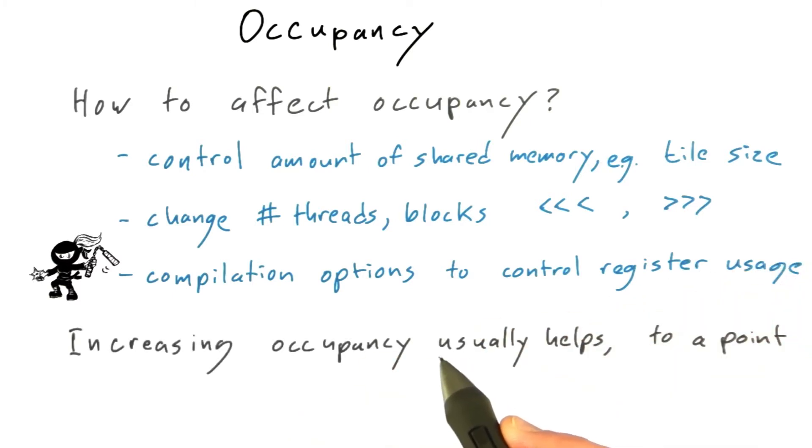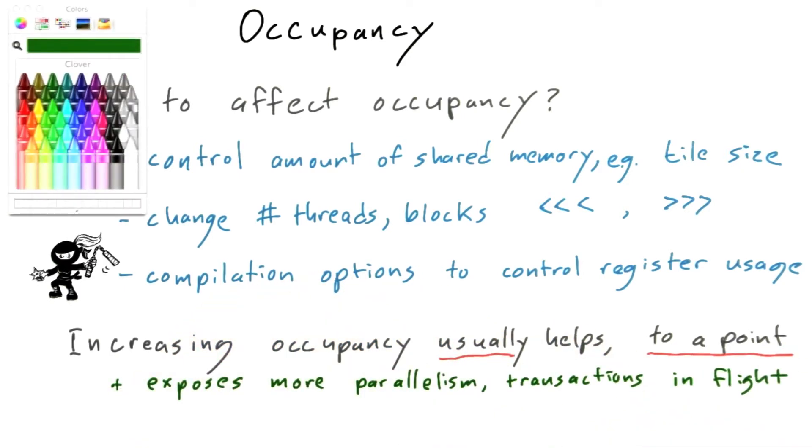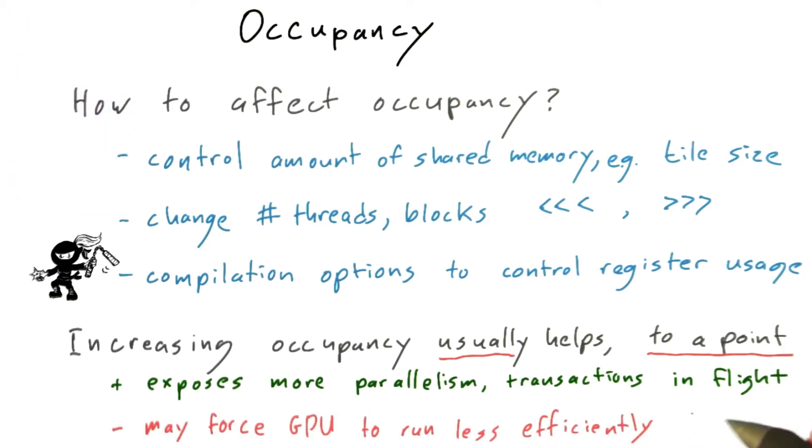Increasing occupancy is usually but not always a good thing, and it only helps up to a point. It exposes more parallelism to the GPU and allows more memory transactions in flight, but it may force the GPU to run less efficiently when taken too far. This is always a trade-off.